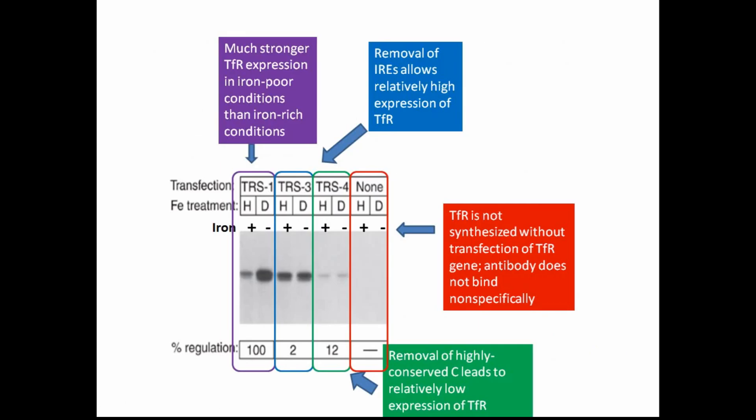Because the desferioxamine group shows a much thicker band than the hemin group, lane 1 tells us that iron has a relatively strong regulatory effect on the synthesis of TFR when construct TRS1 is transfected. Lane 2 shows relatively high expression of TFR and negligible percent regulation with TRS3, whereas in lane 3 we see relatively low expression and again negligible percent regulation. Finally, in lane 4 we see no TFR expression without the addition of a construct, telling us that TFR is not already synthesized in the fibroblast cell without transfection of the TFR gene and that the antibody does not bind nonspecifically.